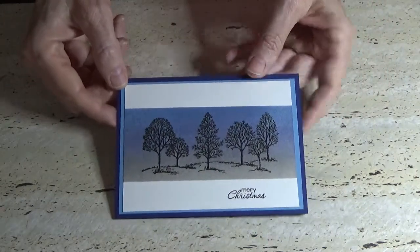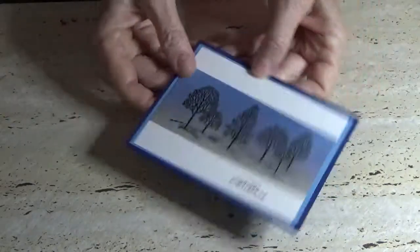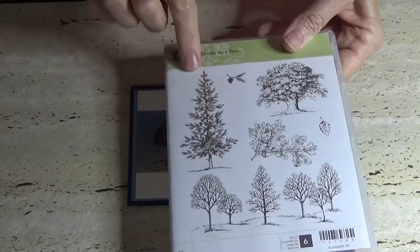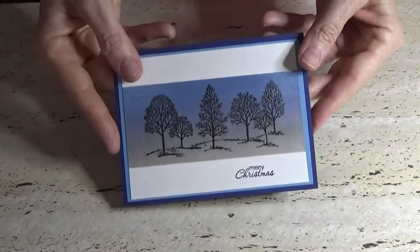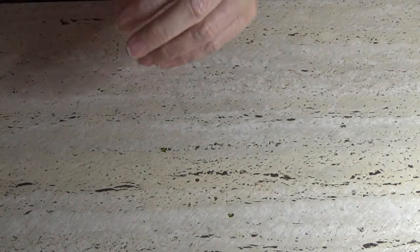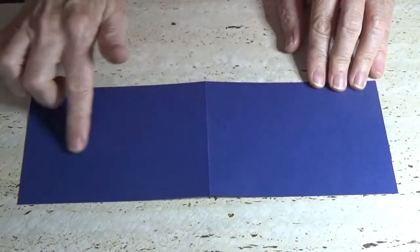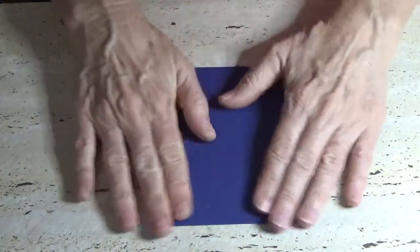This one is in landscape layout but what I want to do this time is still using lovely as a tree stamp set, but we're going to have one coming up this way instead. The bottom base card is Night of Navy, 11 inches long by 4 and 1/8 of an inch wide, and then scored at 5 and 1/2. That's your base.